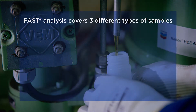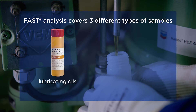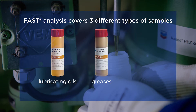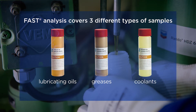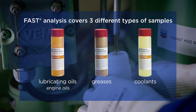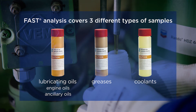The FAST analysis service covers three different types of sample: lubricating oils, greases and coolants. Lubricating oils are divided in two main categories: engine oils and ancillary oils such as hydraulic, compressor, refrigeration and turbine oils.